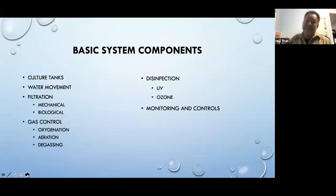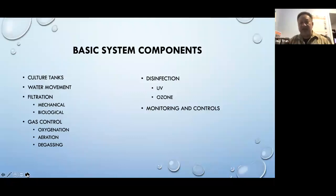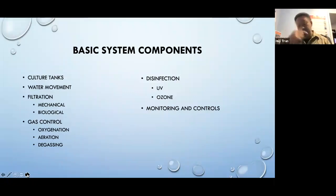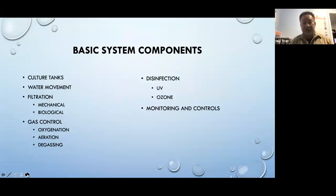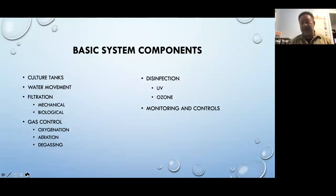The basic system components are: culture tank, water movement, filtration broken down into mechanical and biological, gas control — whether you're oxygenating, aerating, or degassing — and disinfection. Currently, the two most popular disinfection methods in RAS are UV and ozone, plus monitoring and controls.